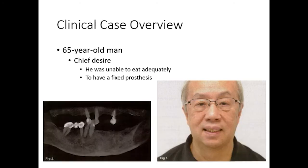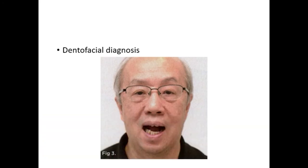A 65-year-old man presented with concerns about quality of life with regard to his oral condition. His chief desire was to have a fixed prosthesis. The patient reported a history of hypertension, elevated cholesterol, and type 2 diabetes. Hypertension and elevated cholesterol were controlled with blood pressure medication and statins, and his diabetes was well controlled with an HbA1c below 7. When smiling, maxillary gingival margins were not visible; however, the patient's mandibular teeth numbers 27 through 31 were exposed and fully visible in the patient's smile.